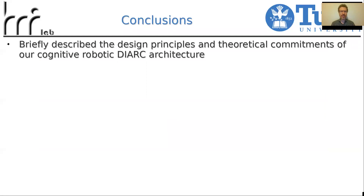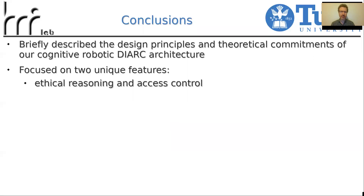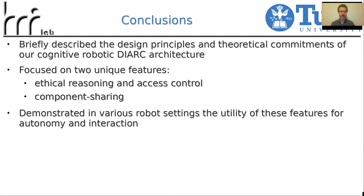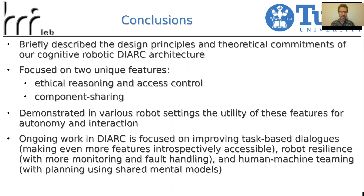To conclude, I briefly described some of the design principles and theoretical commitments of the DIARC robotic architecture, focusing on two unique features: ethical reasoning and access control, and the sharing of architectural components across agents. These were demonstrated in several robot settings, showing the utility of these features for autonomy and interaction. Ongoing work on DIARC is focused on improving task-based dialogues, making them more introspectively accessible, improving robot resilience with more monitoring and fault handling, and improving human-machine teaming with planning methods that use shared mental models.